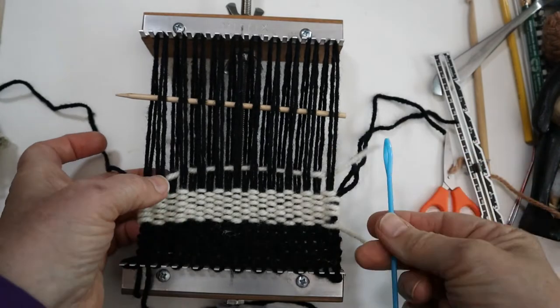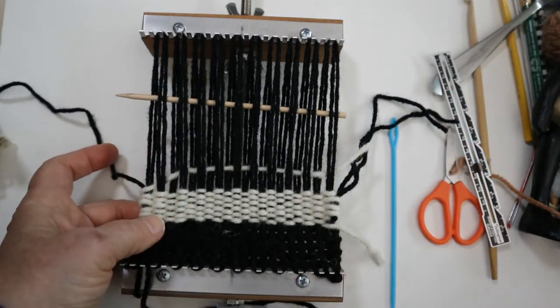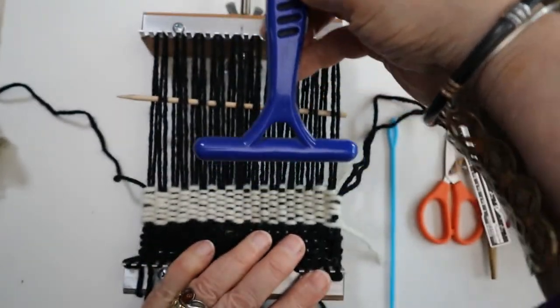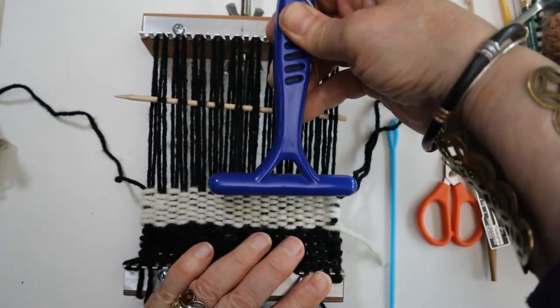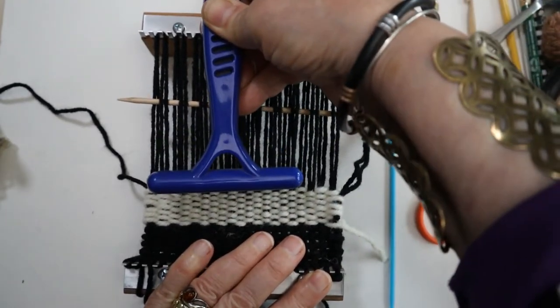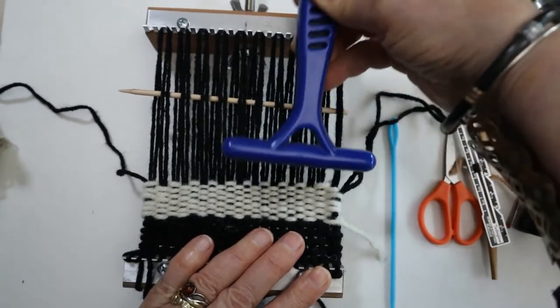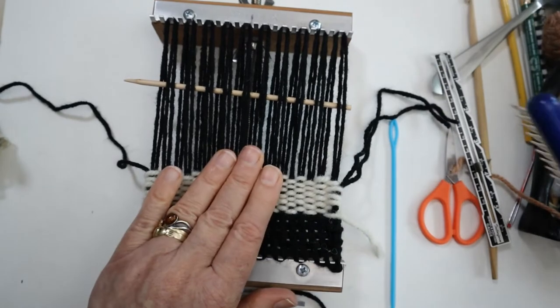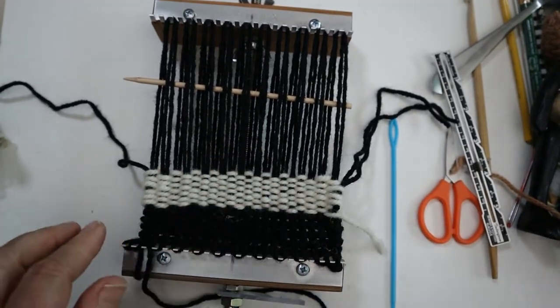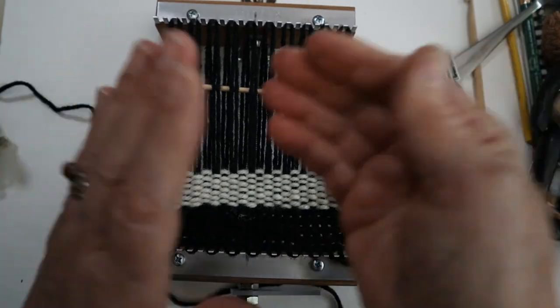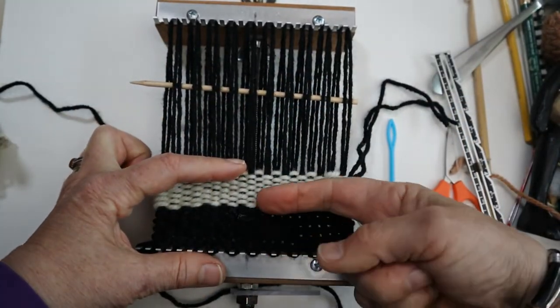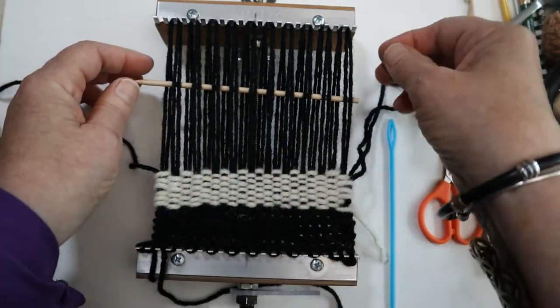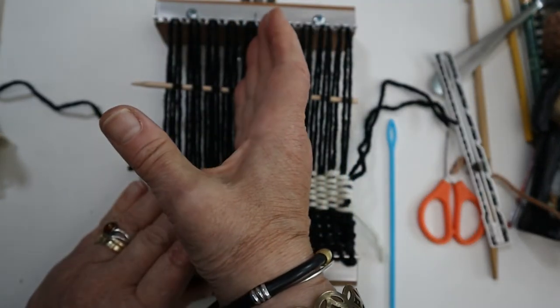I have now woven an inch of, or 2.5 centimeters, of white. It's interesting, but the camera sees more warp strands showing than the human eye does. So now that this is the body, shoulders, tummy and bottom, hip line here.